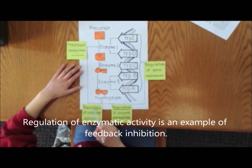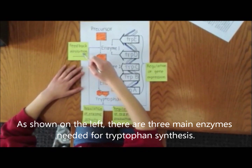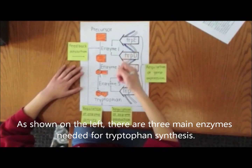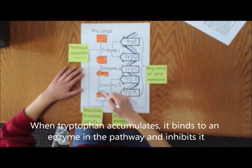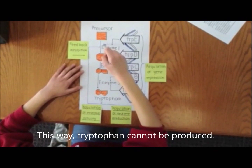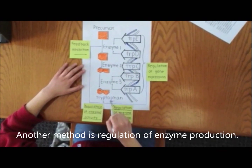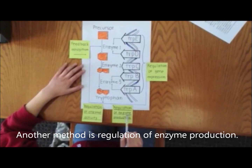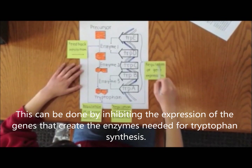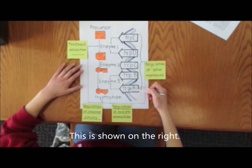Regulation of enzyme activity is an example of feedback inhibition. As shown on the left, there are three main enzymes needed for tryptophan synthesis. When tryptophan accumulates, it binds to an enzyme in the pathway and inhibits it. This way, tryptophan cannot be produced. Another method is regulation of enzyme production, which can be done by inhibiting the expression of the genes that create the enzymes needed for tryptophan synthesis, as shown on the right.